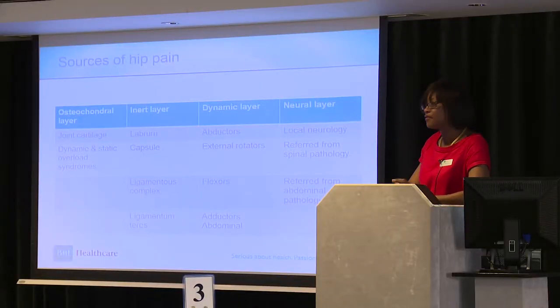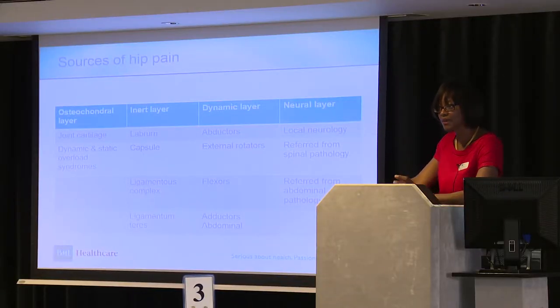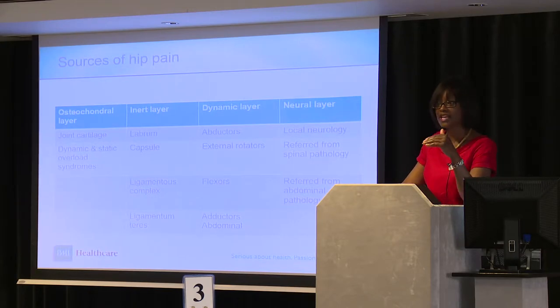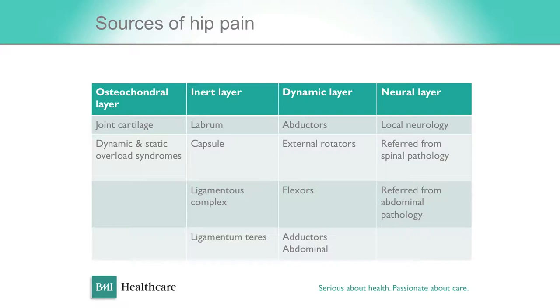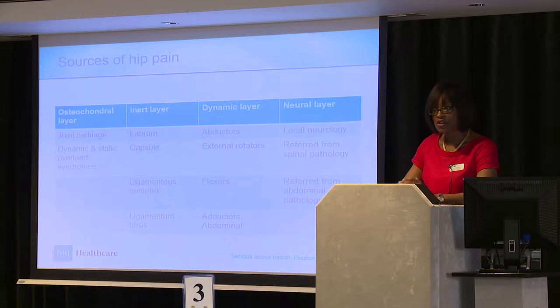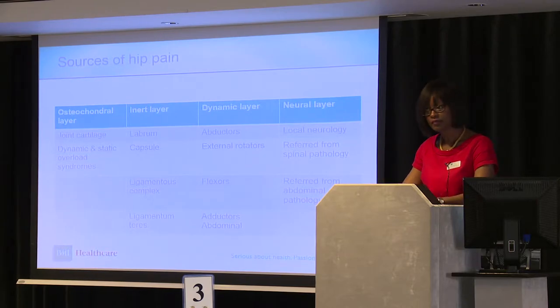From the hip itself, structures that can cause pain can be all layers — the articular cartilage, the muscles surrounding the hip, and inner structures such as the labrum, which is a fibrocartilage structure I'll talk about shortly. Of course there are nerves that traverse the hip. The most common nerve involved in hip pain is the sciatic nerve, because it passes through muscles very adjacent to the hip capsule. It can be involved from muscle hypertrophy — in weightlifters — or from injury at surgery.